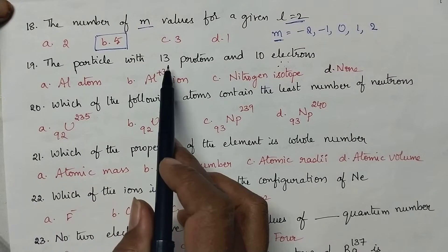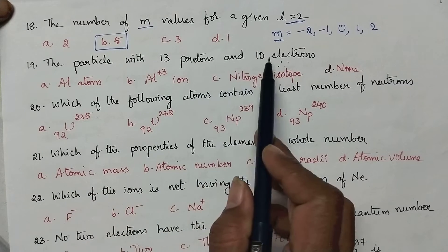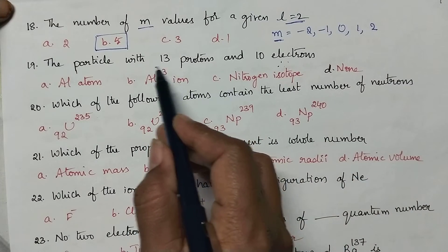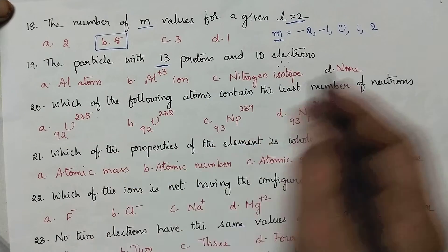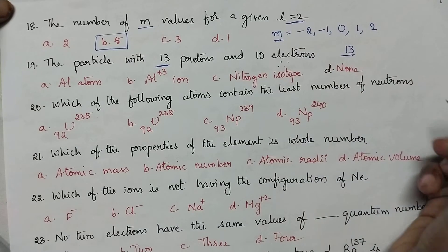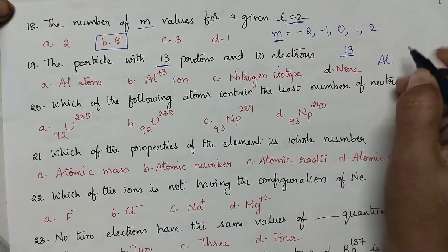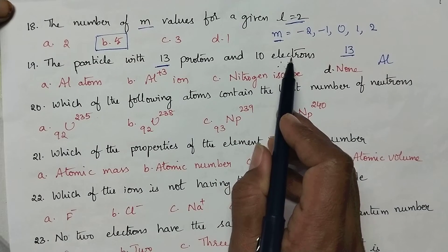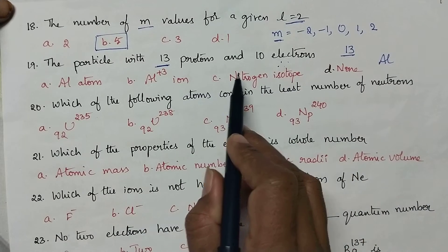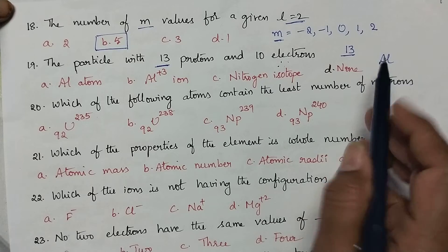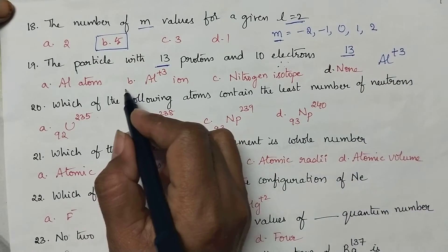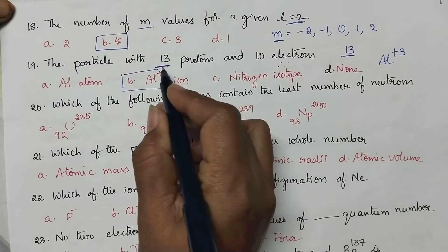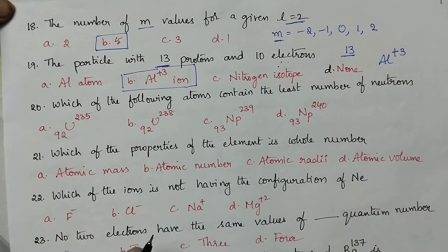The particle with 13 protons and 10 electrons is: here 13 protons are present, that means the atomic number is 13. Element with atomic number 13 is aluminum, and here only 10 electrons are present, meaning 3 electrons are removed from the aluminum. So we represent it as Al plus 3 ion. The right option is B.